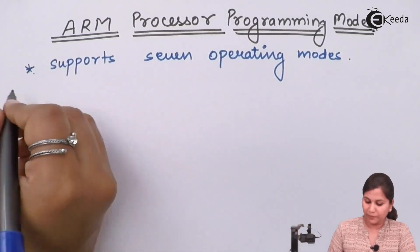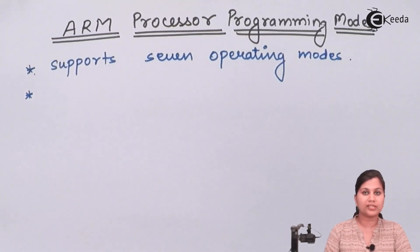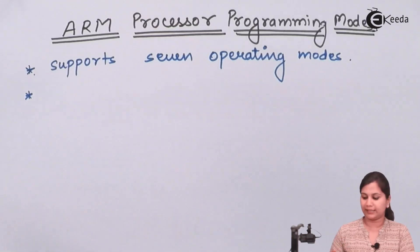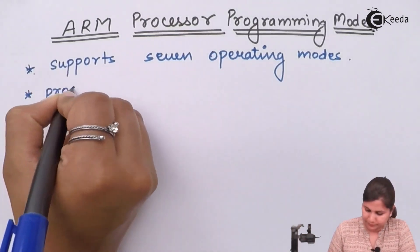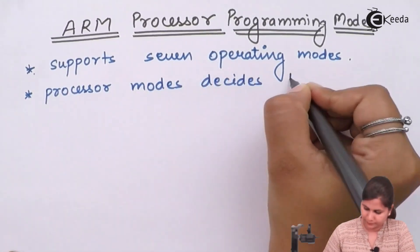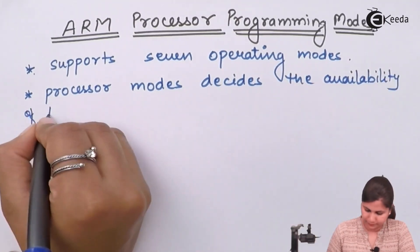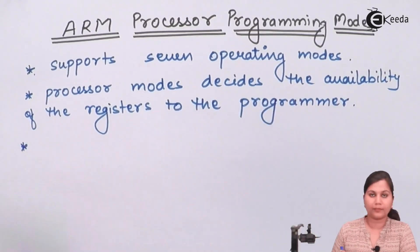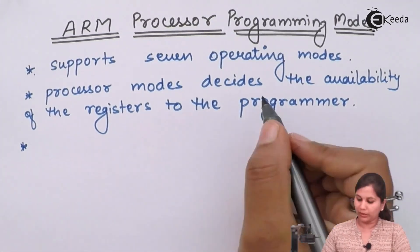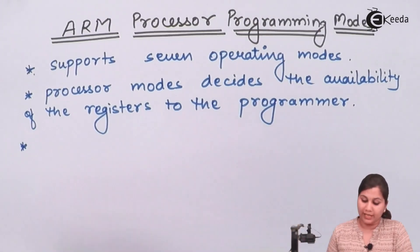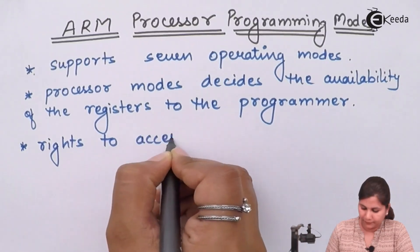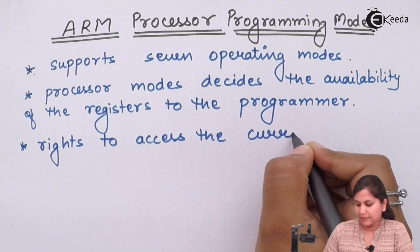These operating modes decide the availability of the registers to the programmer. The registers present in the processor and how these registers can be used by the programmers in the program — that is decided by the operating modes. So one thing decided by the processor mode is the availability of registers to the programmers.